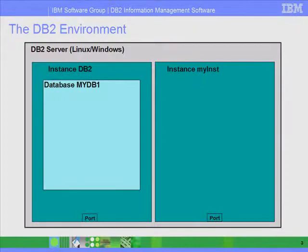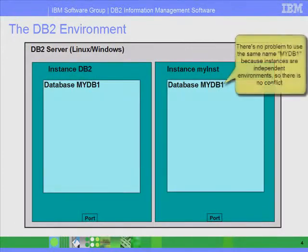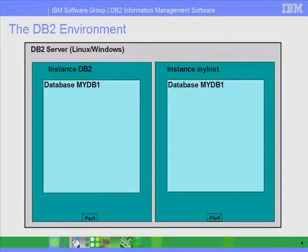What we have here is a database called MyDB1 in instance DB2. As I said before, instances are independent environments. So I could create another database called MyDB1 on a different instance and there would be no problem because these are two independent environments. If you want to access a given database from a client, you can access it through the port of the instance, which is a unique number, and that's how you can uniquely identify which database you want to connect to.